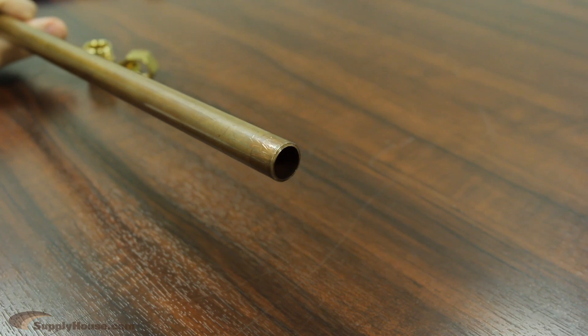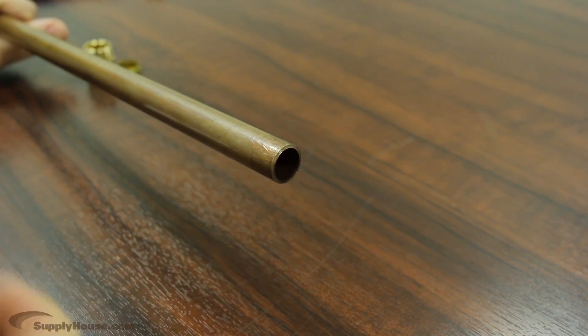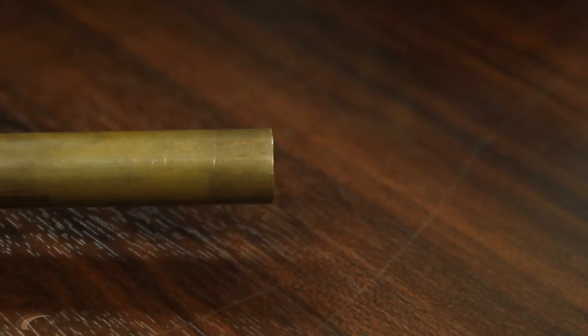Compression fitting sizes refer to the outer diameter of the pipe they work with. So if you're using a 1/2 inch copper pipe, you will need a 5/8 inch fitting that fits over the pipe.